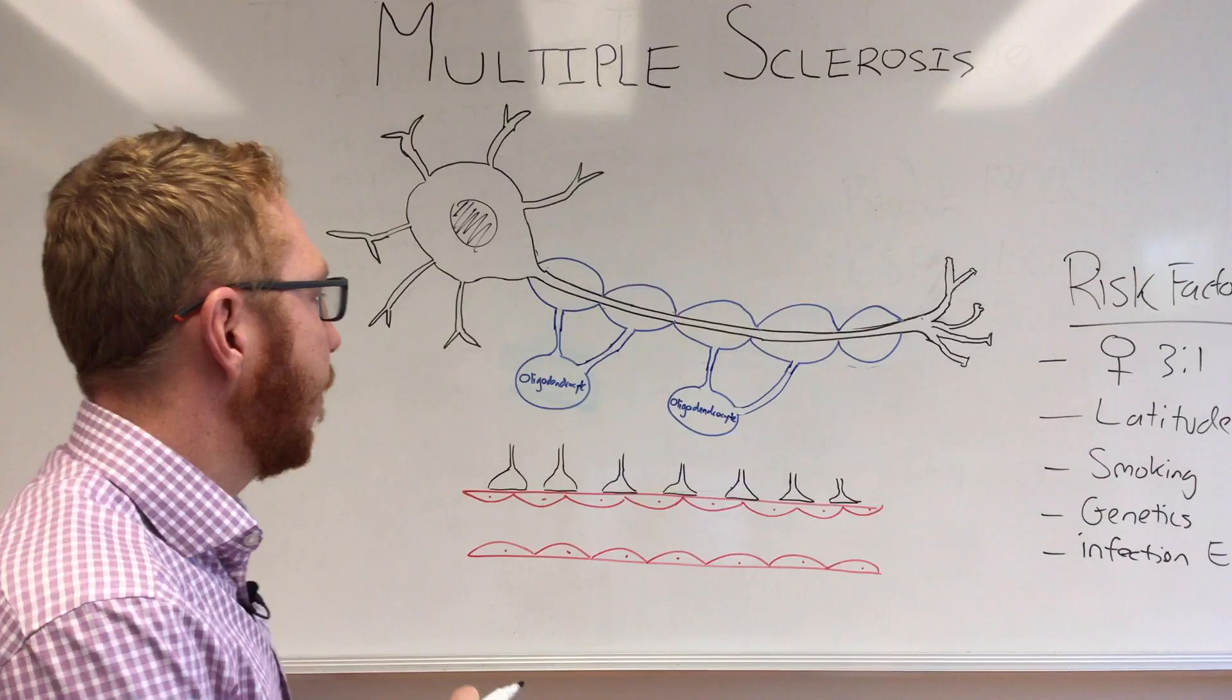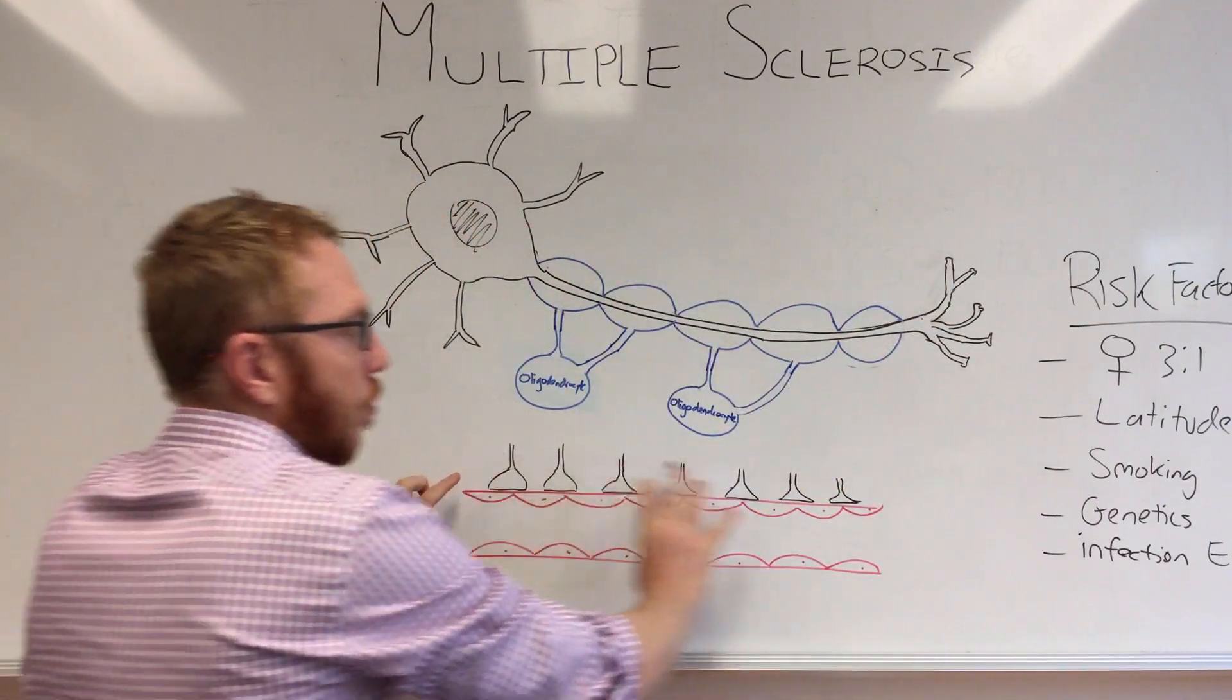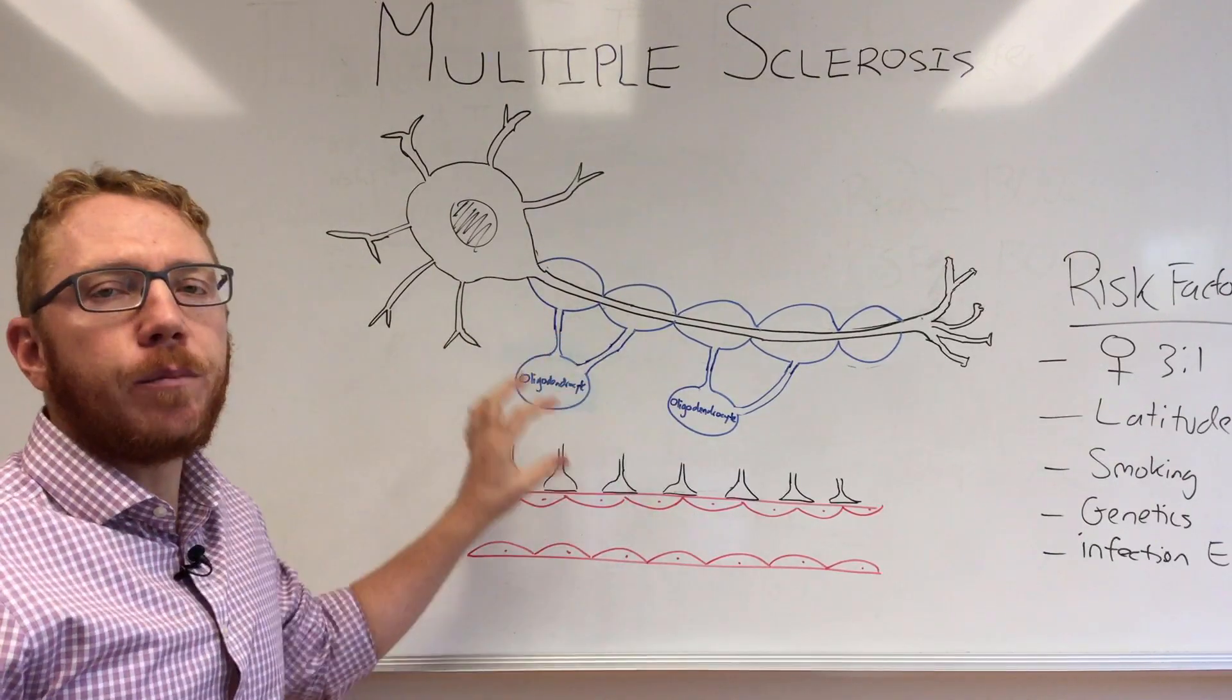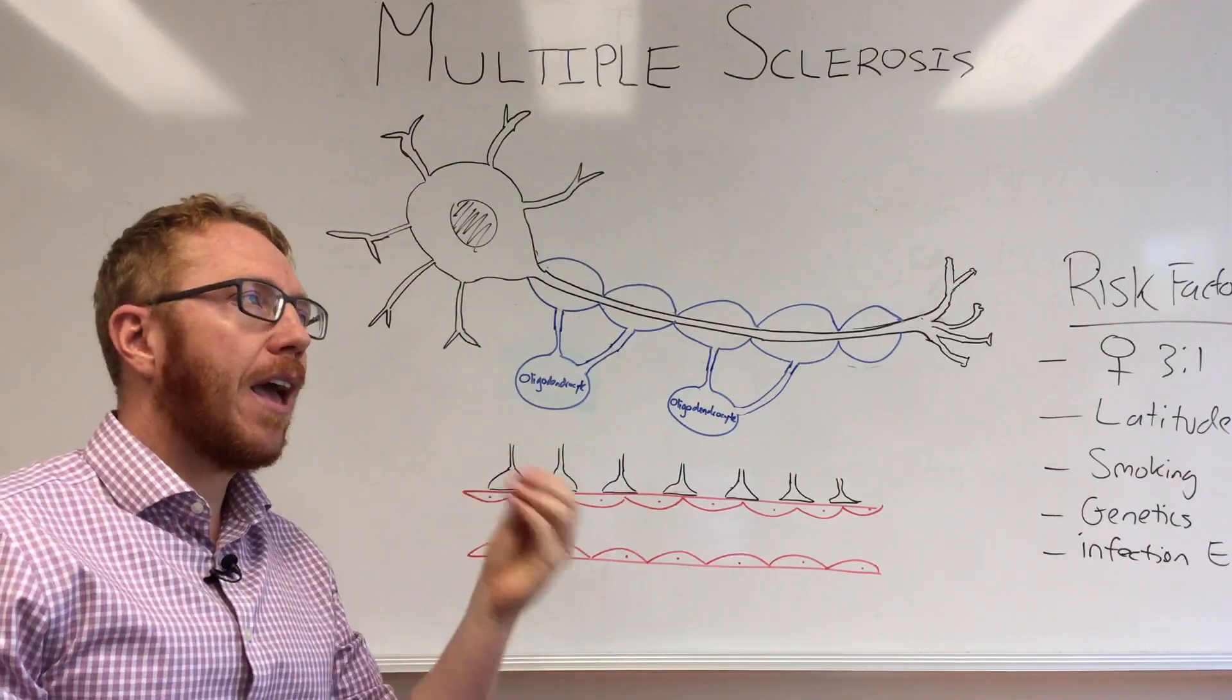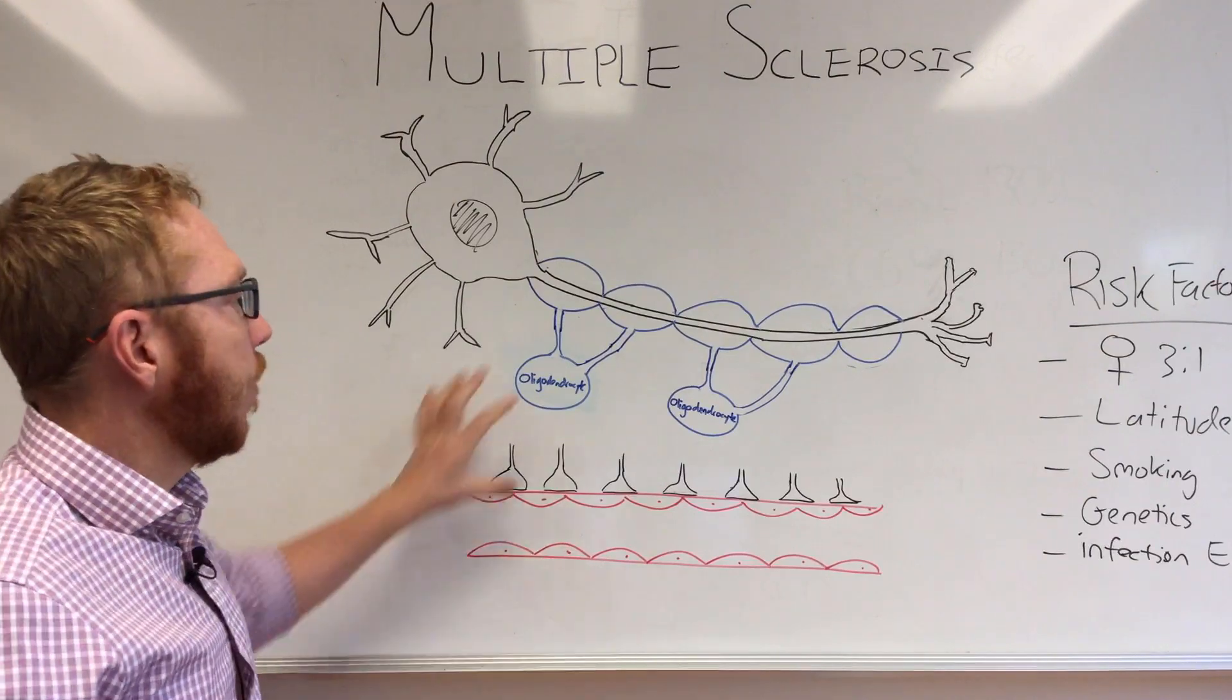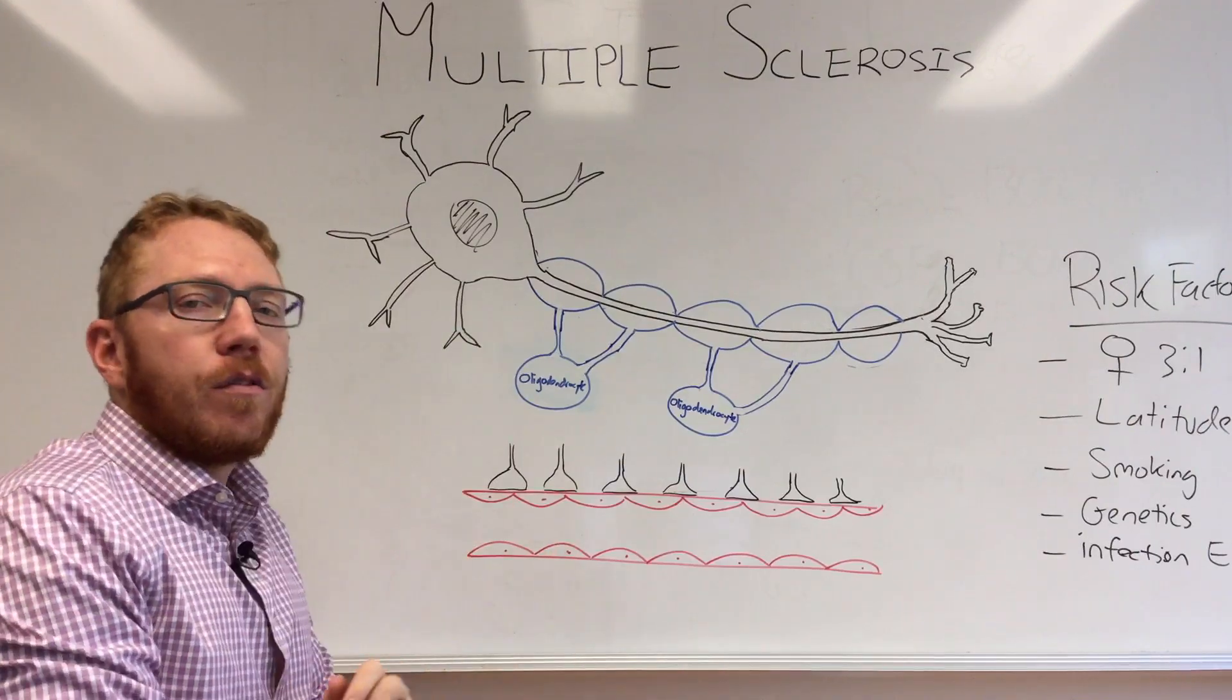Now we will go across to the pathophysiology and start to try and get a head around what leads to MS forming. What I've drawn here is a generic axon with myelin. Down here I've drawn the blood-brain barrier, because within the central nervous system technically we shouldn't find any immune cells. There are the glia that we know as microglia that work as an immune function, but all the white blood cells and other immune cells don't exist within the central nervous system.